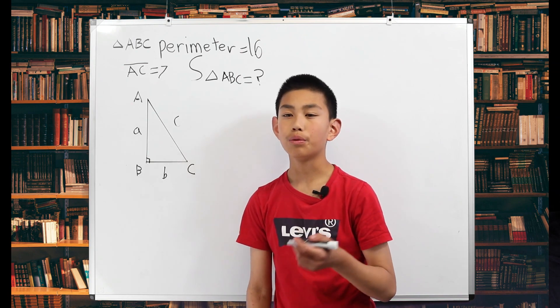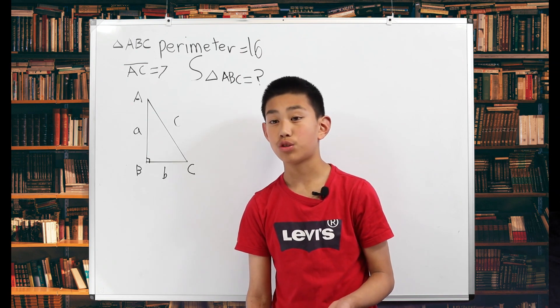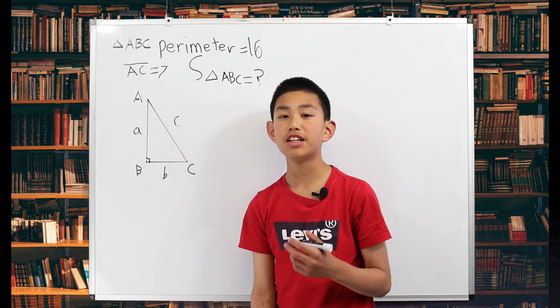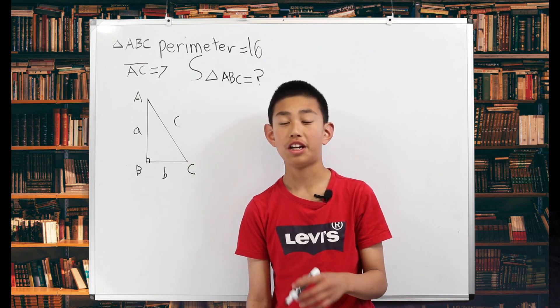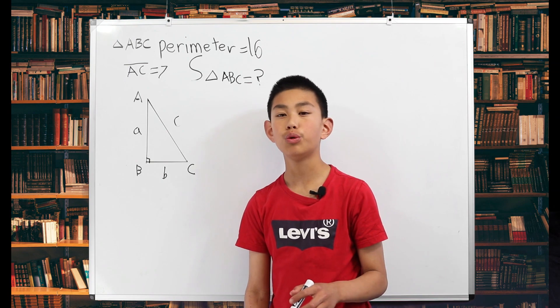For this problem, we don't need to know what A is or B is. We just need to know what A times B divided by 2 is.